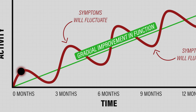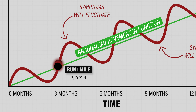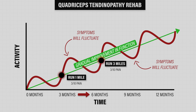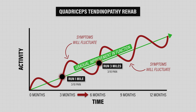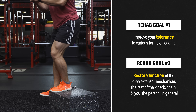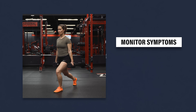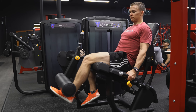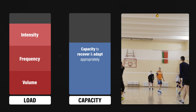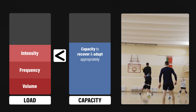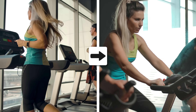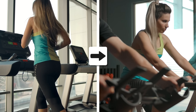An increase in function will not always correlate with a linear decrease in pain. If you go from running 1 mile with a 3 out of 10 pain to running 3 miles with a 3 out of 10 pain over the course of 3 months, that's actually significant progress. The pain may seem like it's staying the same, but technically it's getting better because it requires more activity to reach the same level of pain. Remember, one of the primary goals of rehab is to restore function. You'll monitor symptoms during and after exercise to ensure you're not exceeding your current capacity, while also reducing the frequency, intensity, or volume of activities that are aggravating your symptoms — such as basketball or volleyball — and replacing them with activities that don't exacerbate symptoms to maintain your fitness.